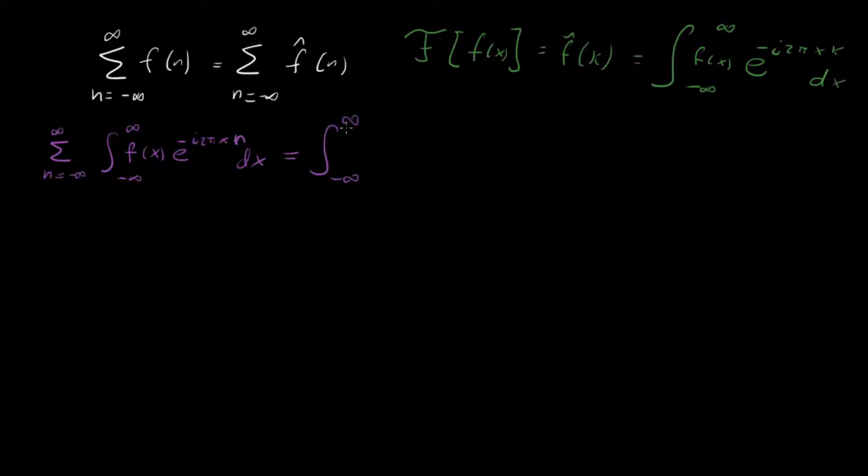So what does that mean? We have integral f of x, and then we have sum n equal minus infinity to infinity e to the minus i 2 pi x n dx.